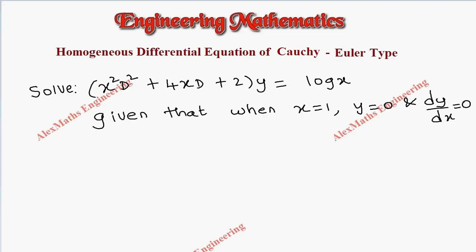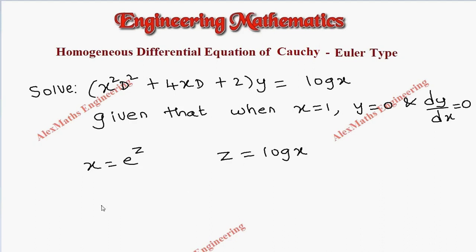Hi students, this is Alex here. In this video we are going to solve a problem based on homogeneous differential equation of Euler type, also known as the Cauchy-Euler type. We have to give a substitution for converting this homogeneous differential equation of variable coefficient to constant coefficient. Our substitution is x equal to e power z, then z will be log x.